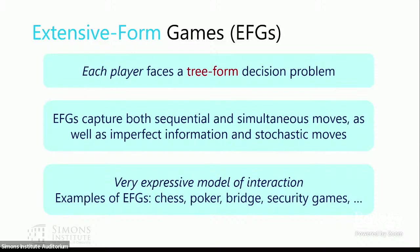Extensive form games are a significantly more expressive model. The key difference is that in extensive form games, every player faces a tree-form decision problem with both decision points and observation points. This structure can capture sequential and simultaneous moves, imperfect information, and stochastic moves like observing a roll of dice. Pretty much all recreational games — chess, poker, bridge — and many non-recreational interactions like security games and sequential auctions can be modeled as extensive form games.